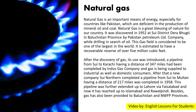After the discovery of gas, its use was introduced. A pipeline from Sui to Karachi, having a distance of 347 miles, had been completed by Indus Gas Company, and gas is being supplied to industrial as well as domestic consumers. After that, a new company, Sui Northern, completed a pipeline from Sui to Multan, having a distance of 217 miles, completed in 1958. This pipeline was further extended up to Lahore via Faisalabad, and now it has reached up to Islamabad and Rawalpindi. Besides, gas has also been provided to Balochistan and NWFP provinces.